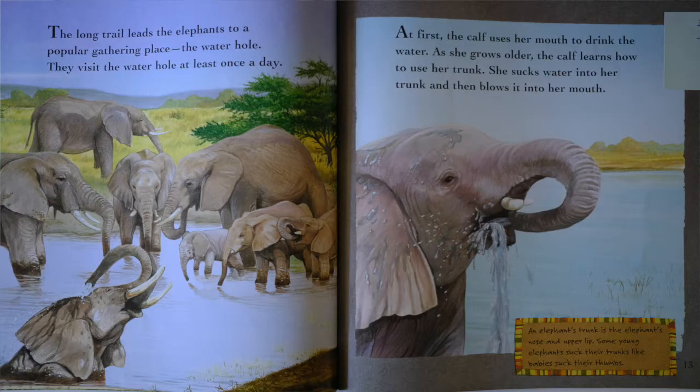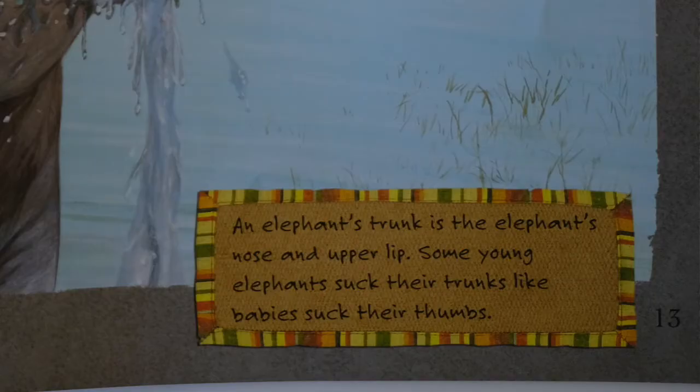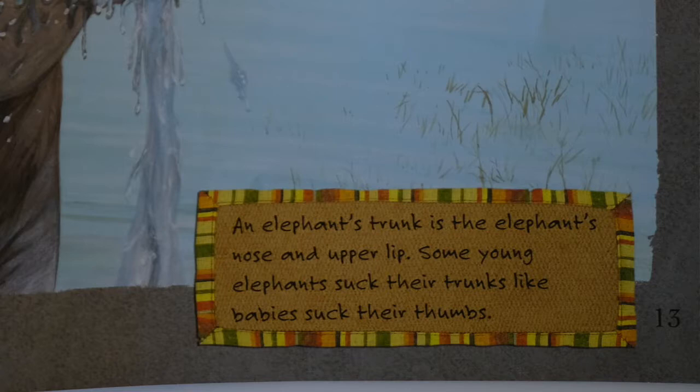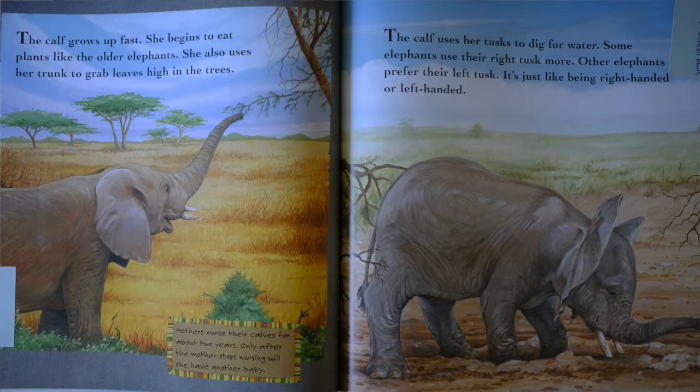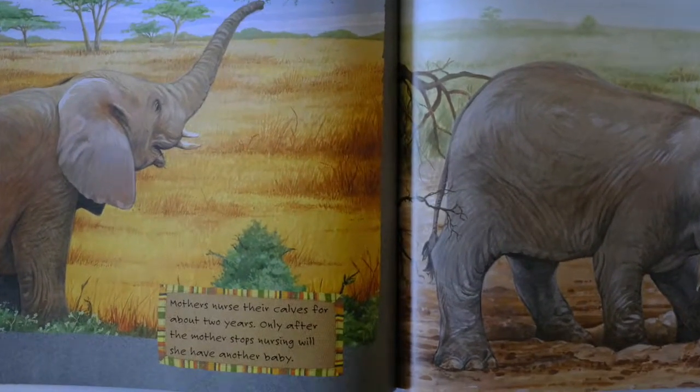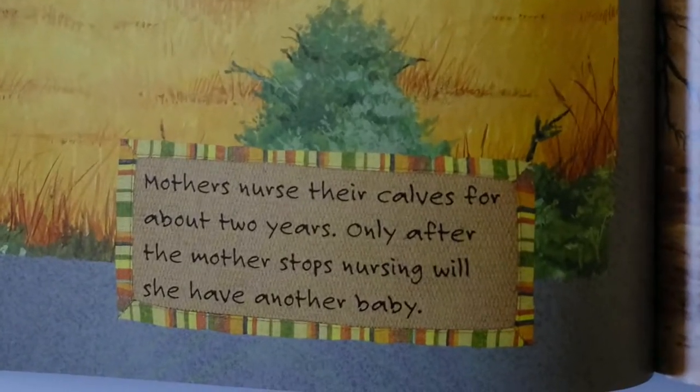The long trail leads the elephants to a popular gathering place, the waterhole. They visit the waterhole at least once a day. At first, the calf uses her mouth to drink the water. As she grows older, the calf learns how to use her trunk. She sucks water into her trunk and then blows it into her mouth. An elephant's trunk is the elephant's upper lip and nose. Some young elephants suck their trunks like babies suck their thumbs. The calf grows up fast. She begins to eat plants like the older elephants. She also uses her trunk to grab leaves high in the trees. Mothers nurse their calves for about two years. Only after the mother stops nursing will she have another baby.